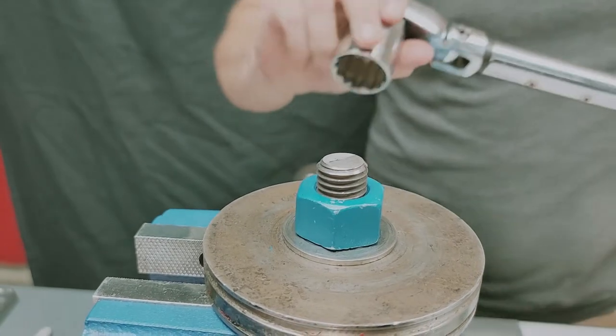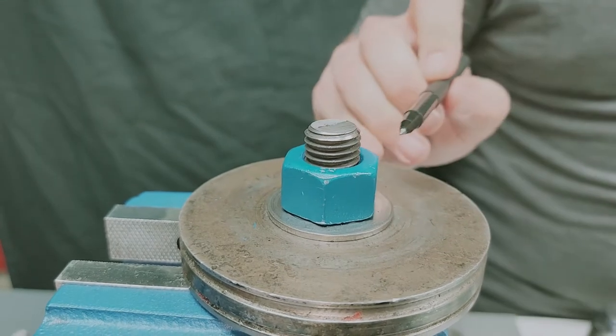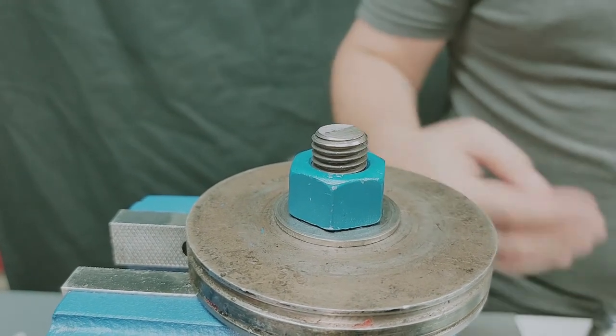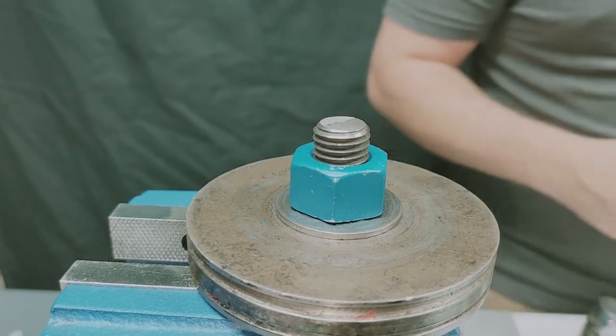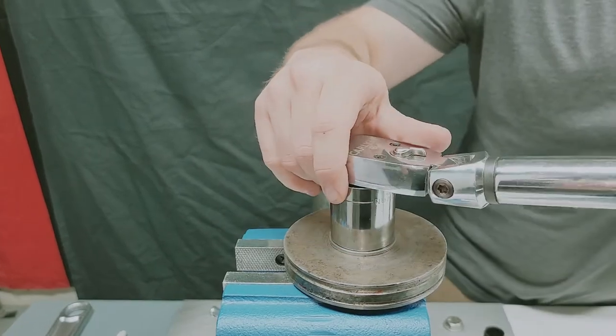Now a properly installed 2H nut is supposed to have 4 threads above the top of the nut. That's the industry standard, industry spec. So you should be seeing 4 threads above the nut that you're going to take off. Here we're going to remove the old nut and put on the new.